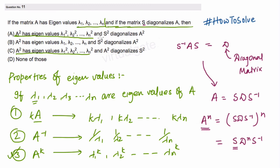Here option C says S² diagonalizes A². But it should be that only S diagonalizes A², not S². So this is not correct. Option B is also not correct because it's completely reverse of what we are studying. Therefore, the correct answer is D.